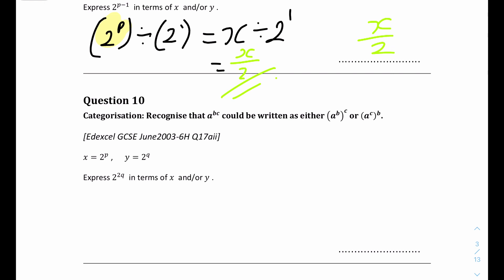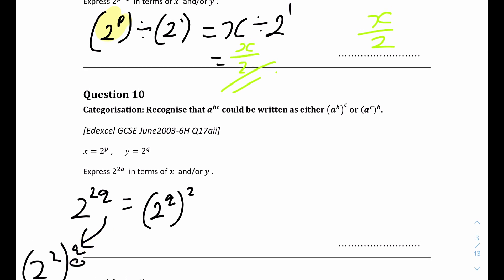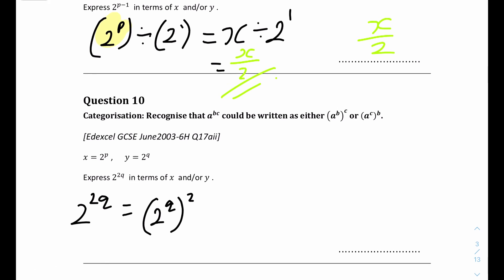For question 10, express 2 to the power of 2q in terms of x and/or y. We rewrite 2 to the power of 2q as 2 to the power of q, all squared. We know that 2 to the power of q equals y, so this becomes y squared. The final answer is y squared.